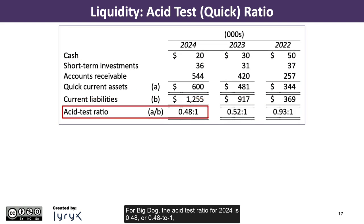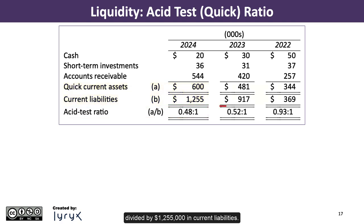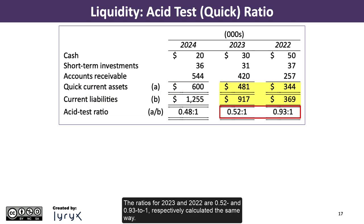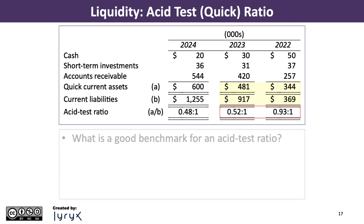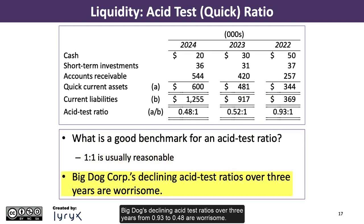For Big Dog, the acid test ratio for 2024 is 0.48 to 1, calculated as $600,000 in quick assets — comprised of $20,000 in cash, plus $36,000 in short-term investments, plus $544,000 in accounts receivable — divided by $1,255,000 in current liabilities. The ratios for 2023 and 2022 are 0.52 and 0.93 to 1 respectively. A 1 to 1 ratio is usually a reasonable benchmark, so Big Dog's declining acid test ratios over three years from 0.93 to 0.48 are worrisome.